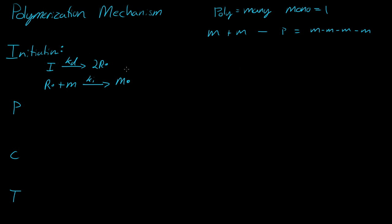So now we have a radical monomer, or a monomer that is a radical, so that monomer can now react with another monomer. So now we have that monomer plus another monomer that is not a radical reacting together at KP, where KP is the propagation.